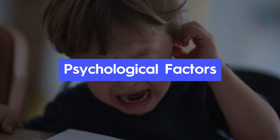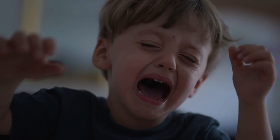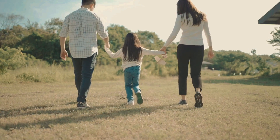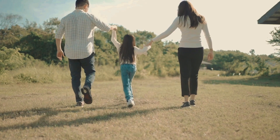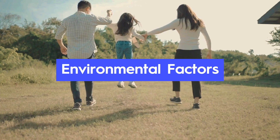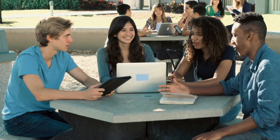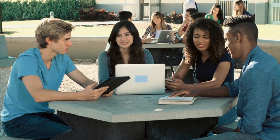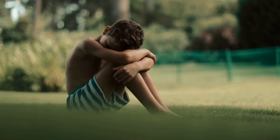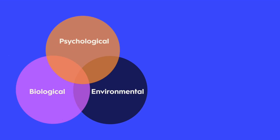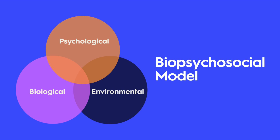Psychological factors like trauma, stress, and learned behaviors influence how people cope and behave. But internal psychology isn't the only influence — our environment also plays a powerful role. Family, culture, and surroundings all shape mental health and development. Poverty, abuse, or lack of support can increase risk. Since biological, psychological, and environmental factors interact, many experts use the biopsychosocial model to understand abnormal behavior more holistically.